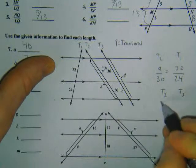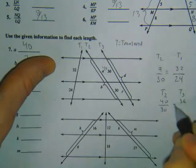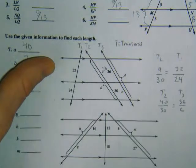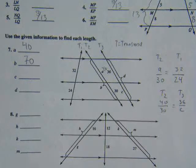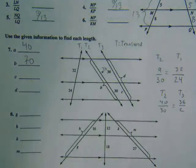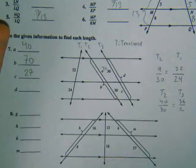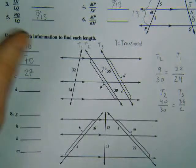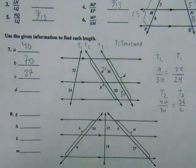So 40 matches up with 36, and 30 matches up with C. Cross multiply and divide. C is 27. C is 27, I would just add them up. 27 plus 36, 63.